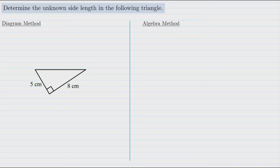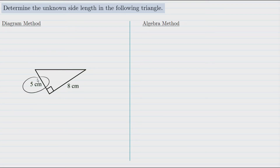In our first example we're asked to determine the unknown side length in this triangle. We have two side lengths but we're missing the third, so that's the one we need to find. We can do this using several approaches — a diagram approach as well as an algebra method — and I'll show you both of those here as I will for the other two examples.